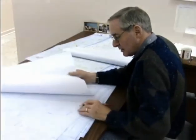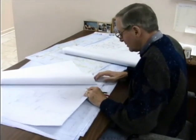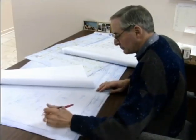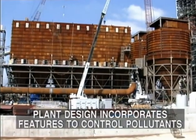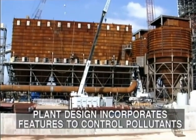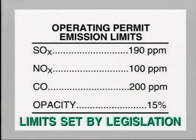During the plant design and construction stage, the engineers need to calculate the probable total quantity of pollutant discharge and identify the source of each individual contaminant. The plant design will then incorporate particular features to eliminate or at least mitigate the effect of these pollutants on the environment. Strict limits are placed upon the allowable concentration of pollutants which may be discharged from the plant, set by environmental authorities and enforced by government legislation.